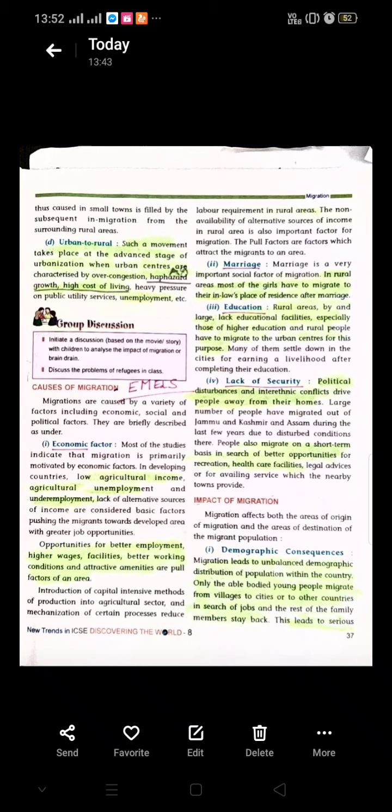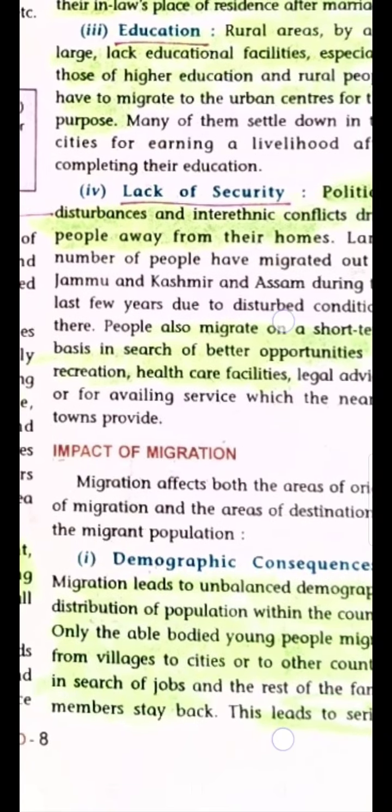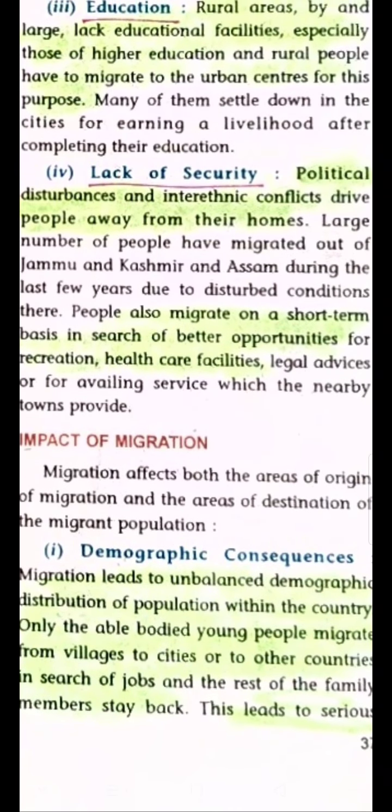Today we start with the impact of migration. Migration affects both the areas of origin. Coming to demographic consequences: migration leads to unbalanced demographic distribution of population within the country. Only the able-bodied young people migrate from villages to cities or other countries in search of jobs, while the rest of the family members stay back. This leads to a serious imbalance in age and sex ratio.